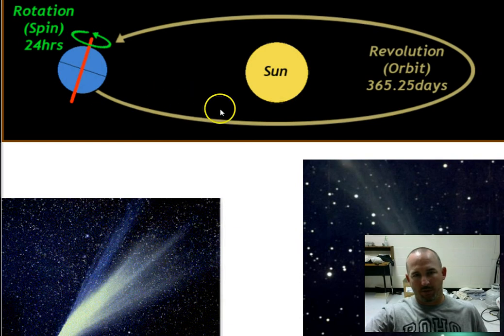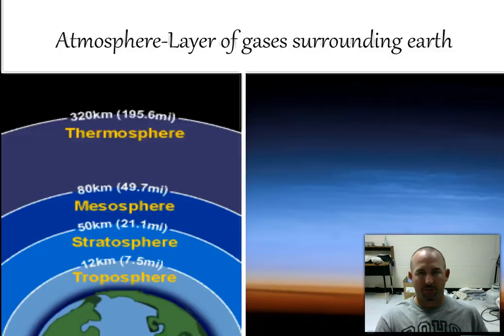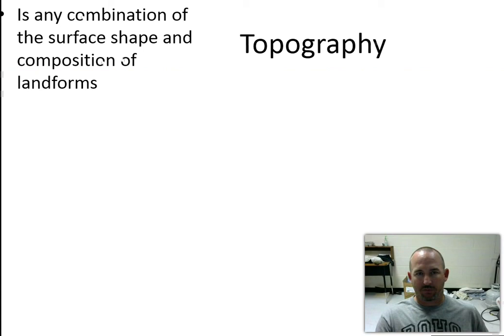Revolution is how we orbit all the way around the sun. So make sure you understand that—it can be confusing sometimes, being that they both start with R. So rotation is a 24-hour period. Revolution, one year period.